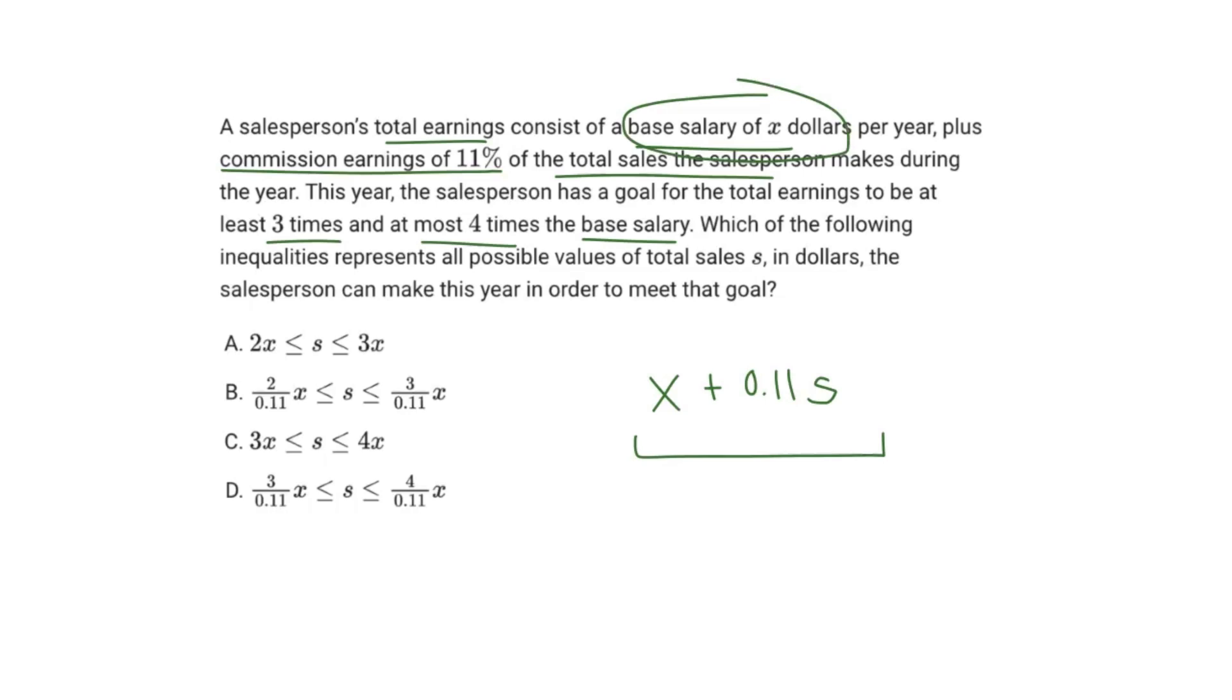Which of the following inequalities represents all possible values of total sales S in dollars the salesperson can make this year in order to meet that goal? So we just have to write our inequality out.